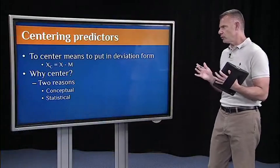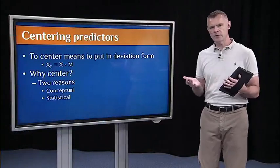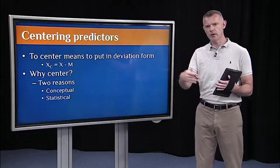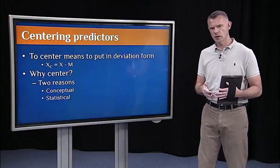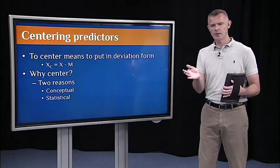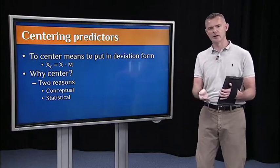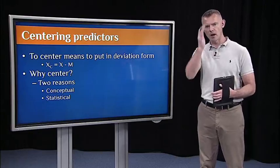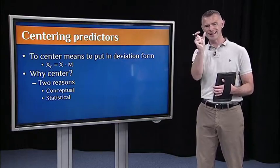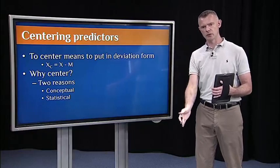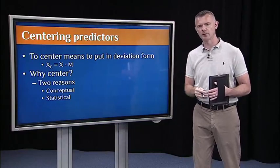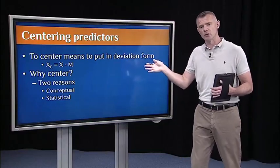So what does it mean to center predictors? It's very simple. It just means to take your predictor variable and put it into deviation form. That is, create deviation scores instead of the raw scores. We did that back when we learned how to calculate variance. We took our raw scores, found the mean, and created deviation scores by taking each score and subtracting the mean. To get variance, we then squared them and summed them and got sums of squares.